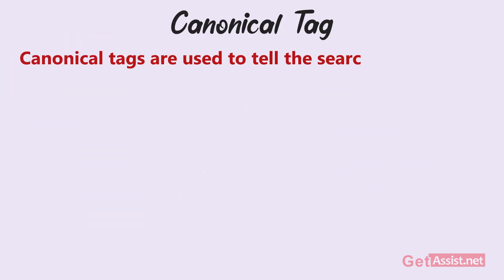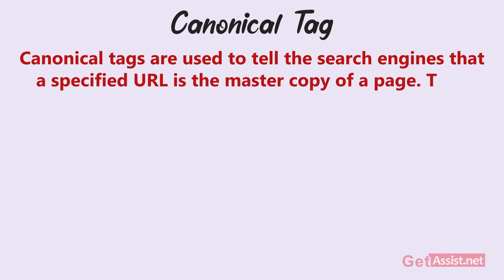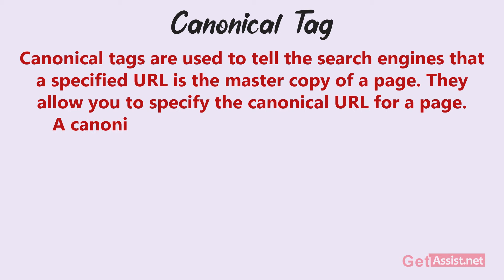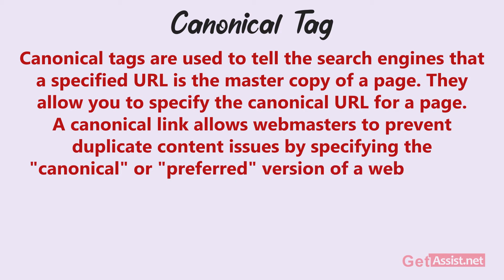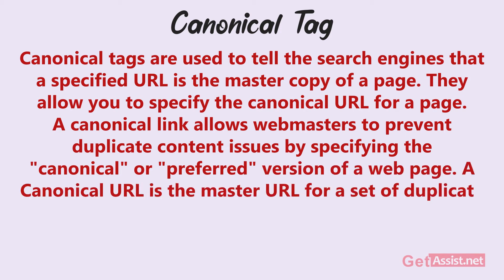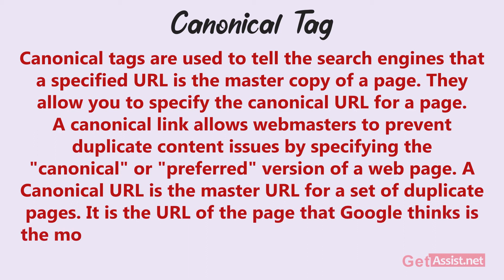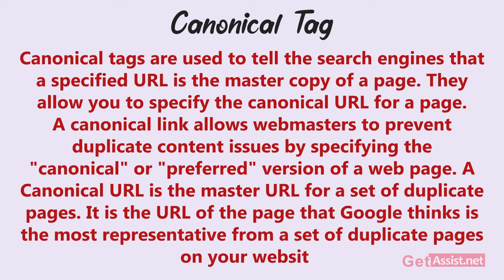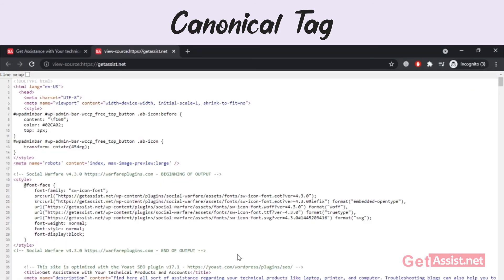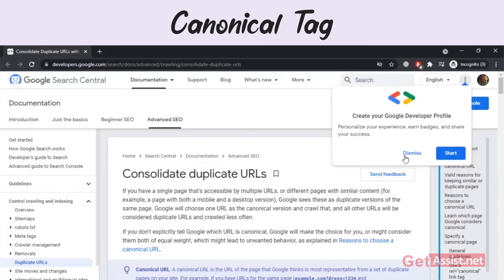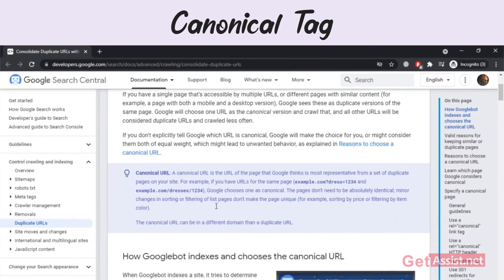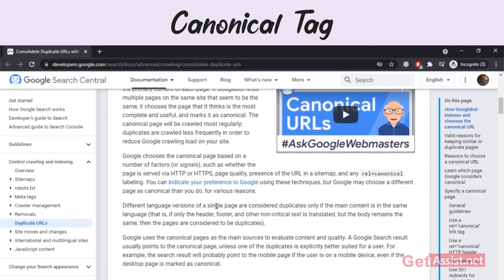Canonical tags are used to tell the search engines that a specified URL is the master copy of a page. They allow you to specify the canonical URL for a page. A canonical link allows webmasters to prevent duplicate content issues by specifying the canonical or preferred version of a web page. A canonical URL is the master URL for a set of duplicate pages — it is the URL that Google thinks is the most representative from a set of duplicate pages on your website. Found in the header section of a web page's HTML source code, on the official Google page you can read all about canonical URLs and how Google indexes and chooses the canonical URL.